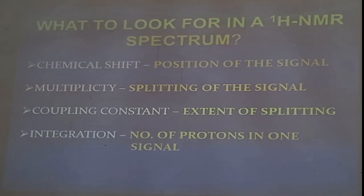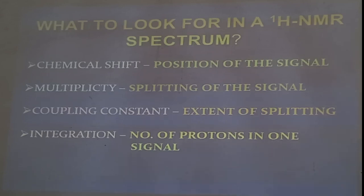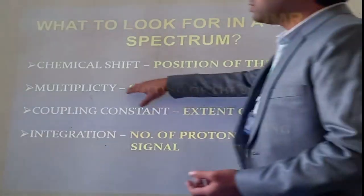The next thing to look at in a spectrum is the multiplicity of the signal. Multiplicity means the splitting of the signal. Sometimes in your proton NMR spectrum these signals are split — some appear as a pure single peak, but some signals may be split into two, three, four peaks or even a complex splitting pattern.